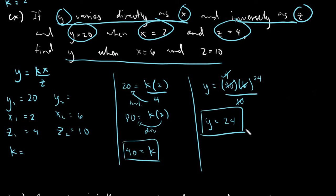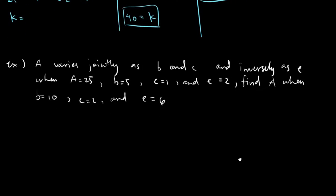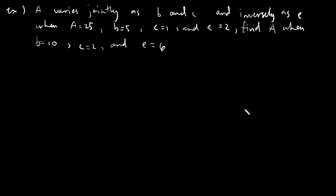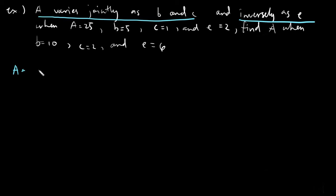You see how easy it is to solve if you know the steps — if you know the steps and you know how to multiply and divide, it's very easy to solve for the answer. For the last example: A varies jointly as B and C and inversely as E.